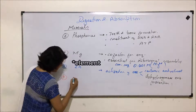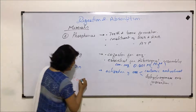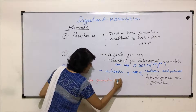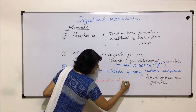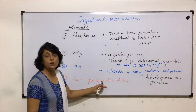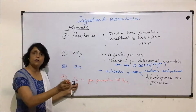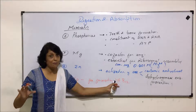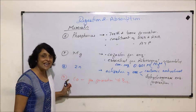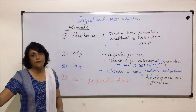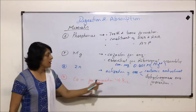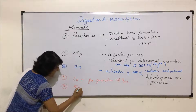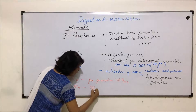Next is cobalt. It is essential for the formation of vitamin B12 (cyanocobalamin), as cobalt is a constituent of B12. Vitamin B12 is essential for RBC production, so if cobalt is deficient, B12 levels drop and deficiency symptoms related to RBC production will be seen.